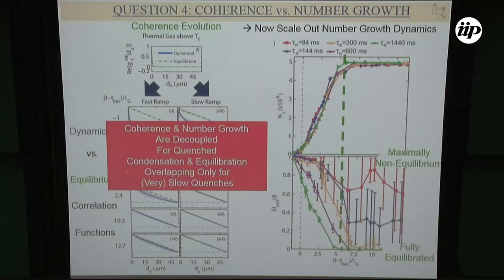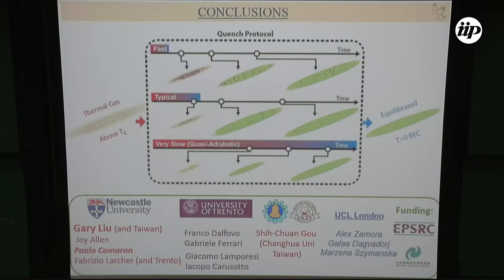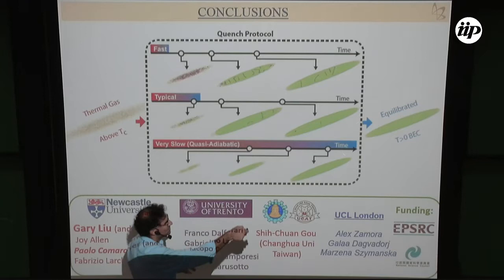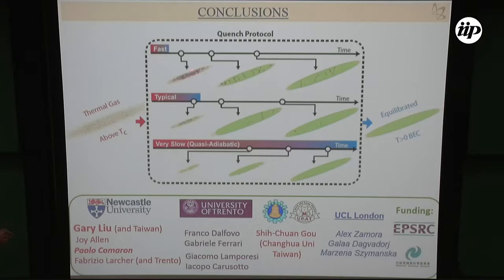Because I've run out of time, let me conclude with this message: we started with a thermal gas above TC and equilibrated it to a finite-temperature BEC — not a pure BEC, there's still a large thermal fraction. Depending on how fast or slow we go, the growth can happen much after the ramp has finished and you have many more defects. But if you go very slowly, you grow into a phase-coherent condensate.